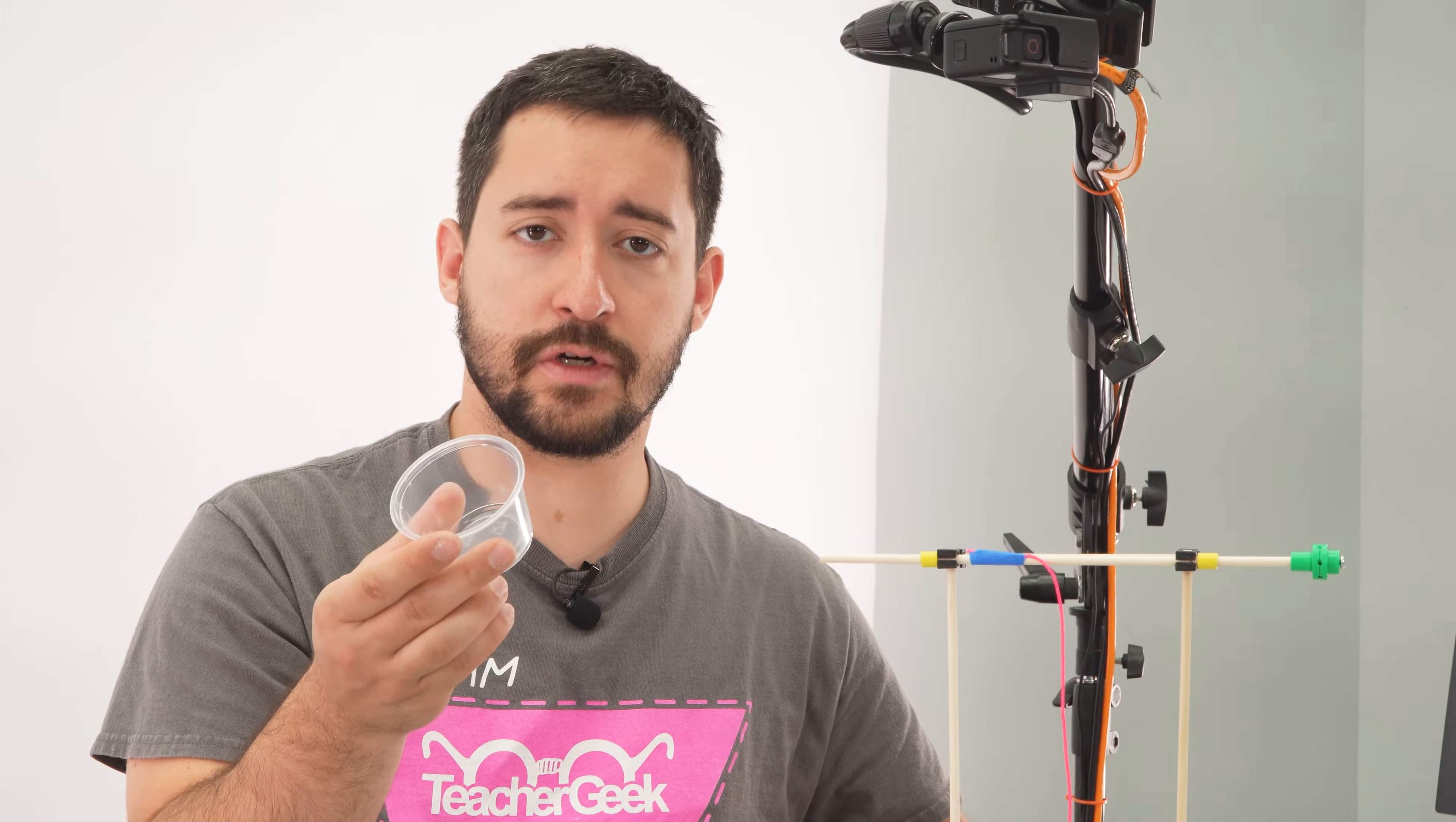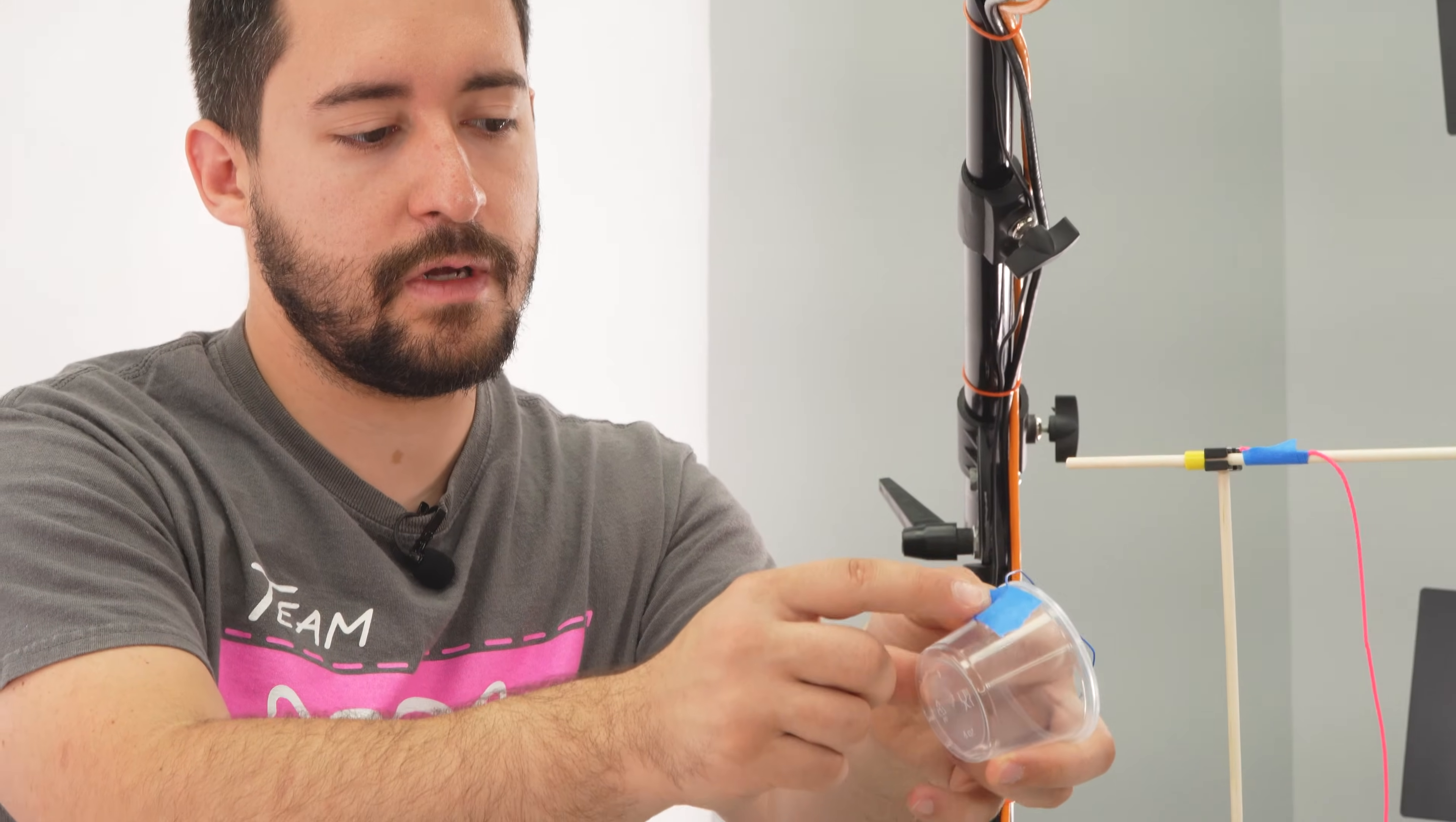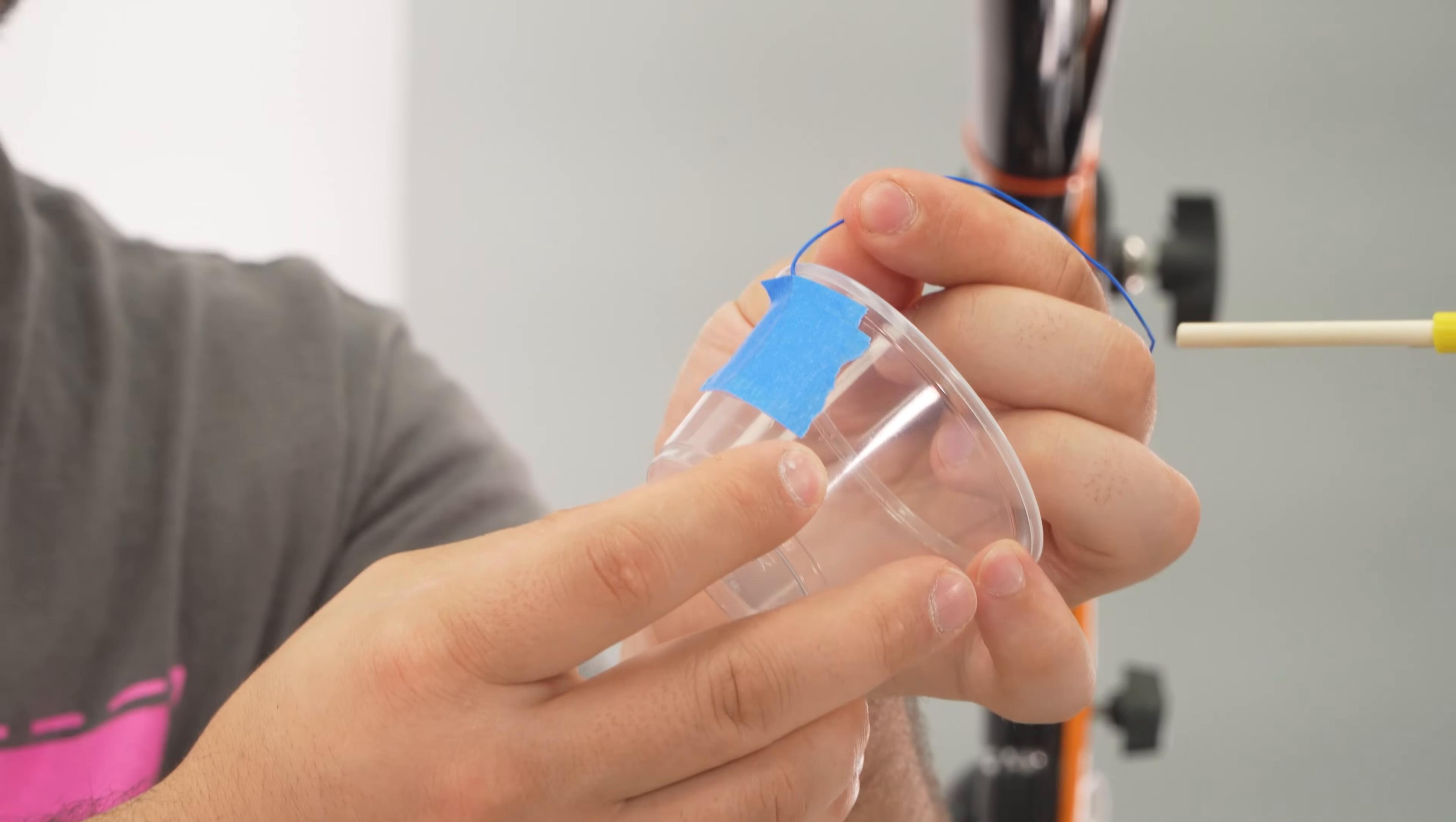Next, we're going to add our portion cup which holds the weights. Start by taping one side of the wire down. And to make it even stronger, if you leave a little bit of extra and fold it back over the tape, you can apply a second piece of tape. That'll keep the wire from pulling off the cup. I'm going to do the same thing to the other side.